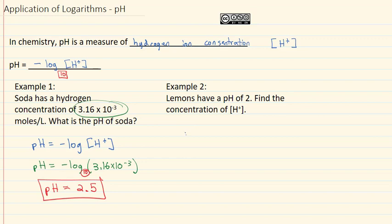Again, the pH formula is negative log of the hydrogen concentration. And we are told that lemons have a pH of 2. This time, we're given the pH. So this time, we know 2 is equal to the negative log of the hydrogen concentration.